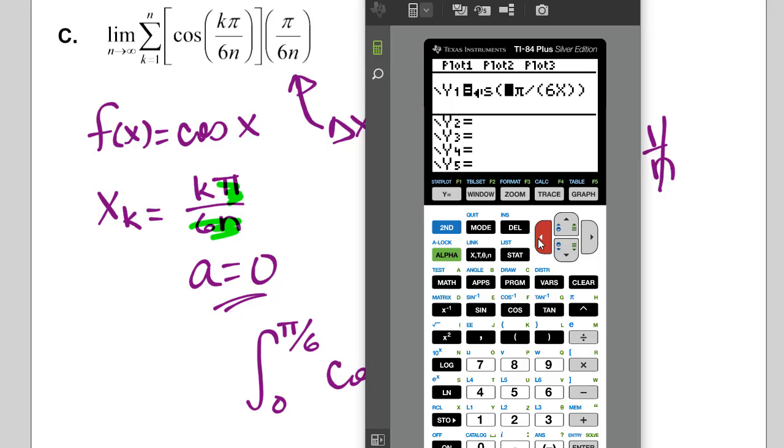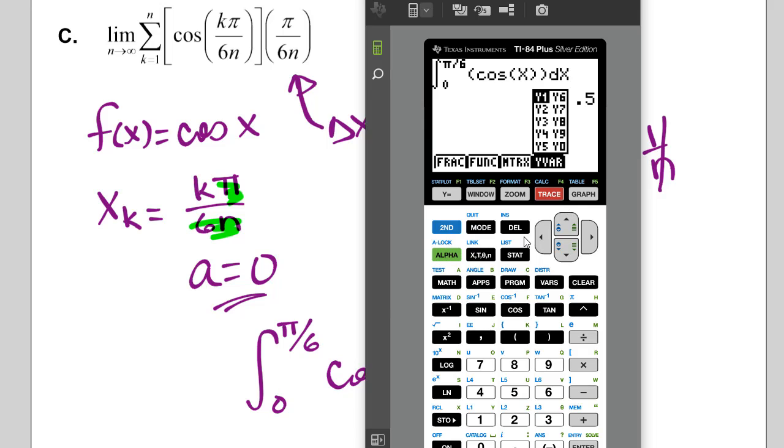So again, we've got pi over 6x. Okay. And all that's times the sum of k equals 1 to x of cosine k pi divided by 6x. Okay. So we're ready to try some values. All right. So I'm going to start out with 1,000. And that brings us very close to 0.5. All right.